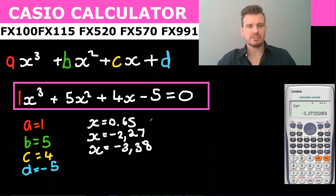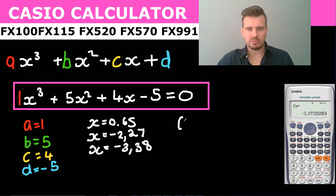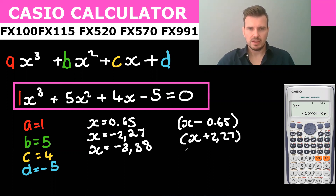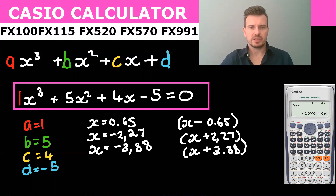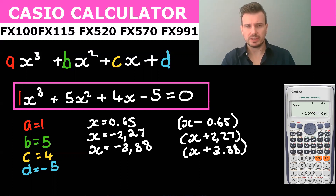And if I wanted to factorize this — so if there wasn't an equals sign and I needed to factorize — I would simply change the sign. So my factors would be (x minus 0.65), (x plus 2.27), and (x plus 3.38). And if I was drawing my graph, these would give me my x-intercepts. I will do another video where I show you how to draw a cubic graph and we can expand on this.